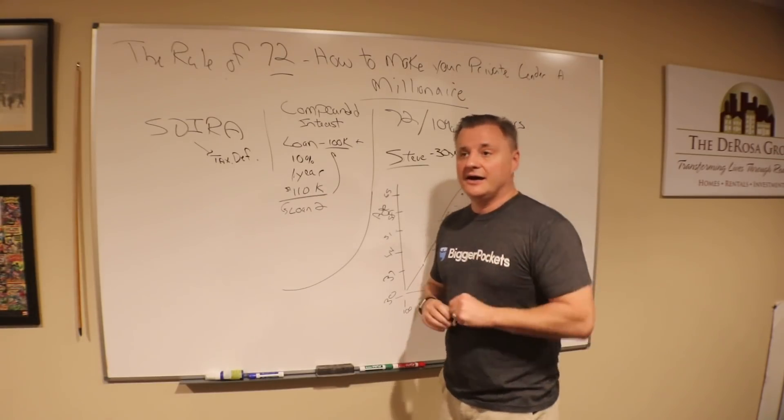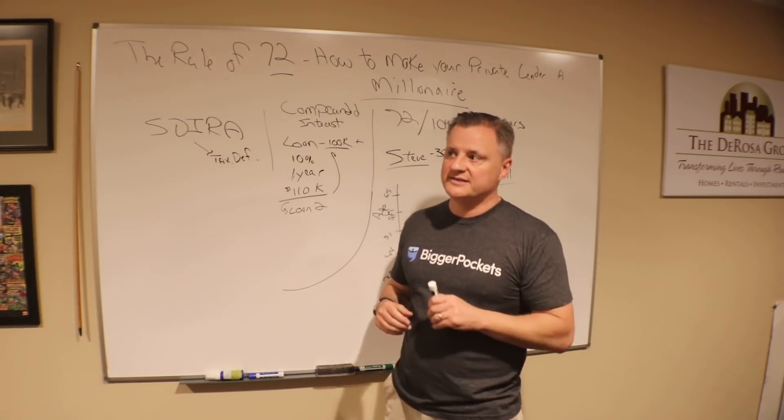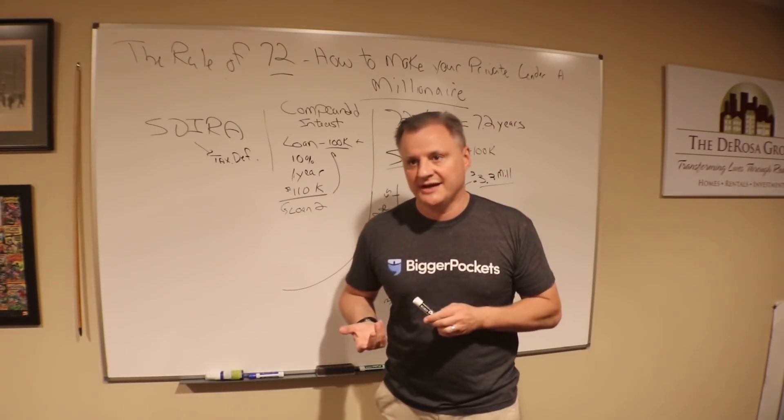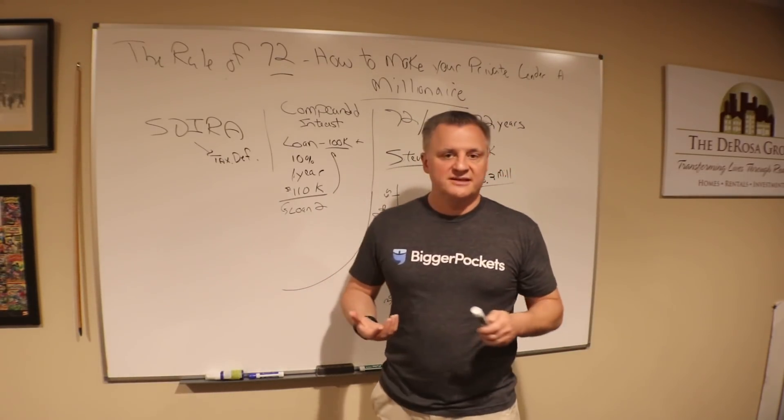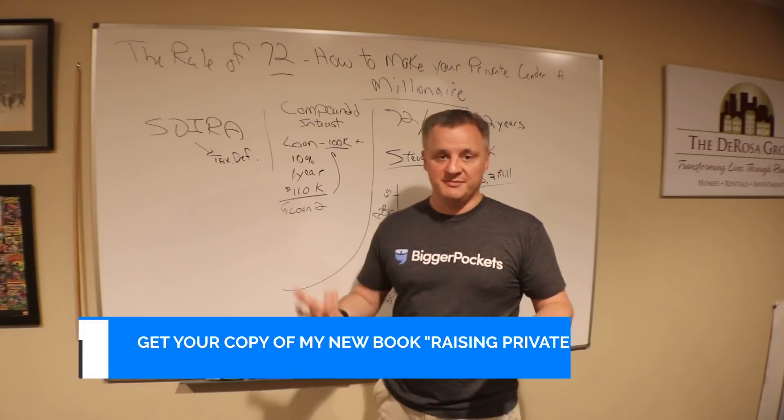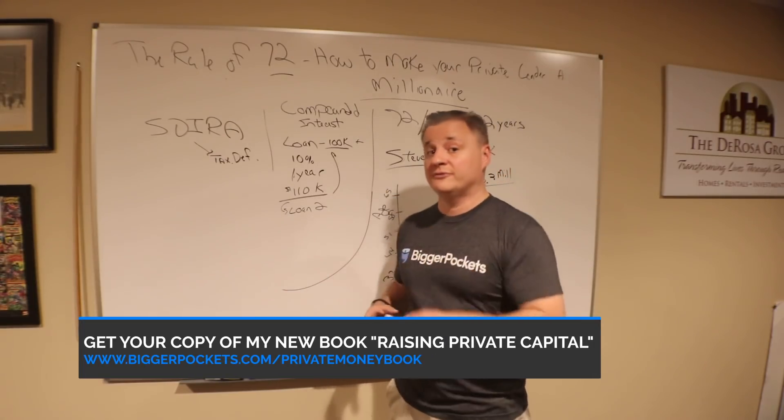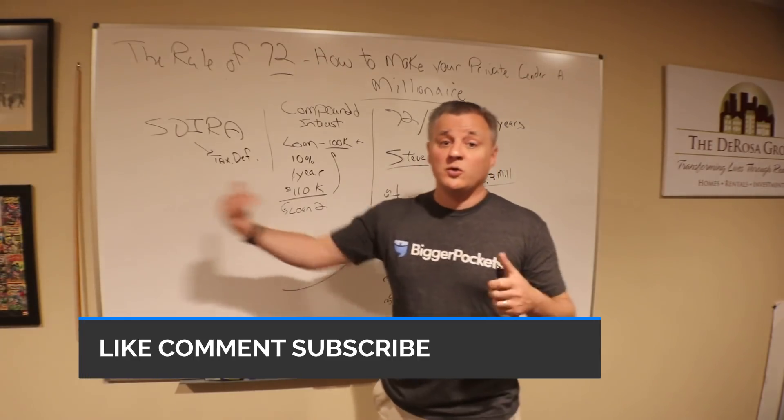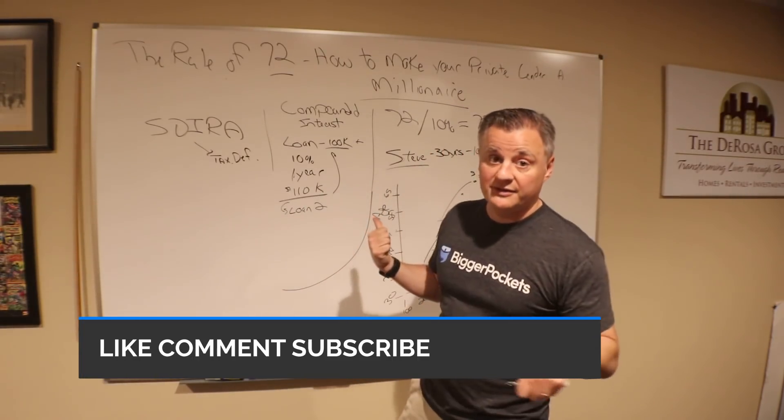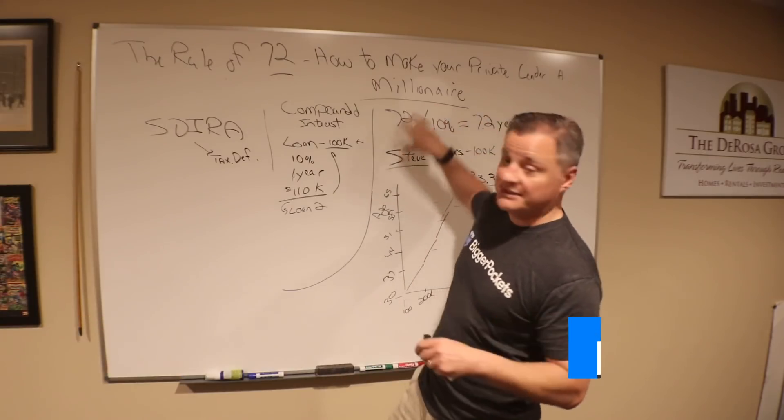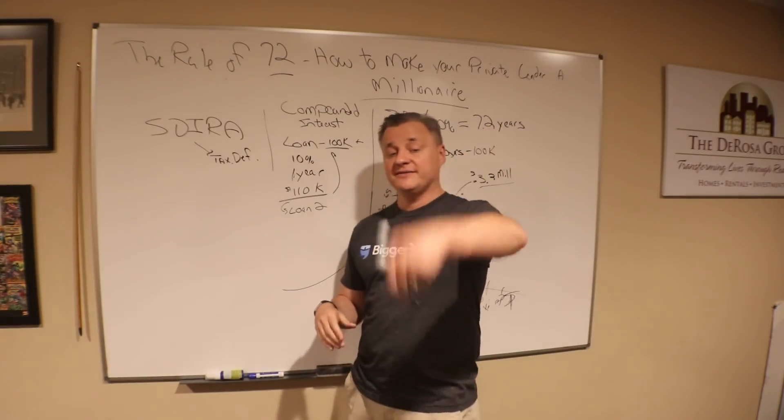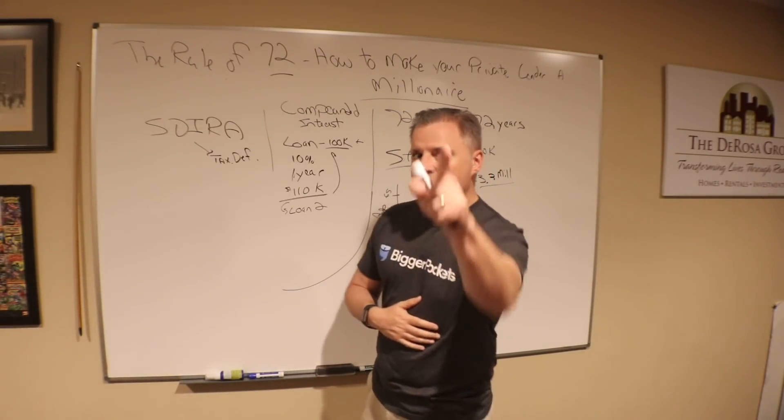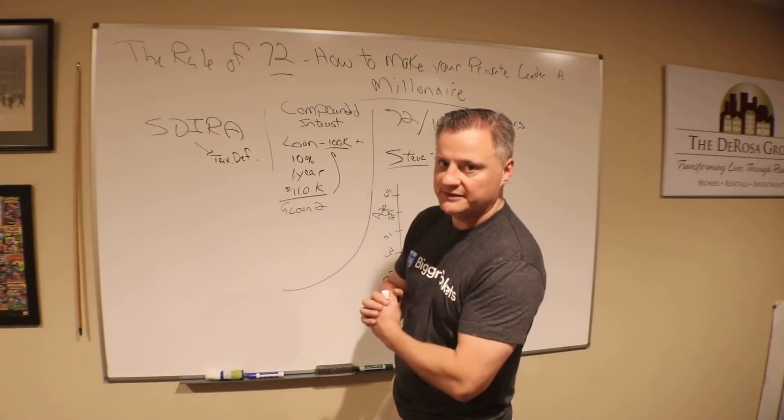I want you to leave some comments below because I want to get into a conversation with you on how we as real estate investors can create wealth for people. The book I wrote, Raising Private Capital, is all about creating win-win situations and making people that work with you extremely wealthy through rules like the Rule of 72. Leave a comment below so we can chat about that. Thank you for watching, and have a great profitable week.